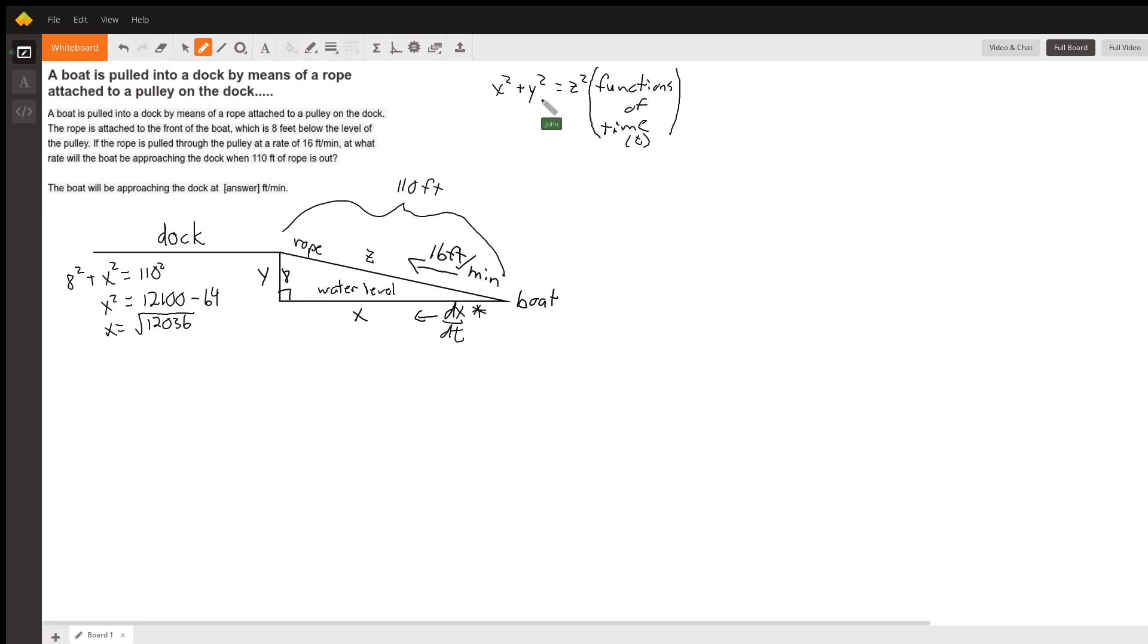So we can take Pythagorean theorem right here and use it as our function, as our mathematical model. And we can do implicit differentiation with respect to time t by using the power rule. So derivative of x squared is 2x, and we multiply it by dx over dt.